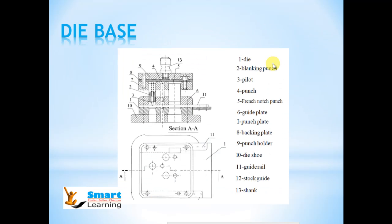Now you can see a basic die set. This is a plan view of the die. You can see few holes in the die. Number one is the die. And below it is a die shoe, that is number 10. The strip is guided through 11, that is the guide rail.